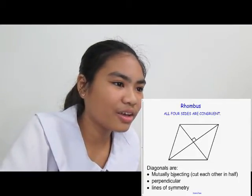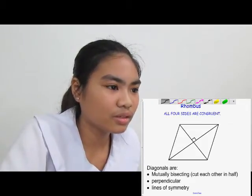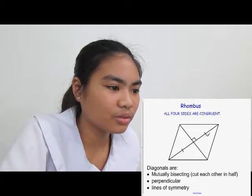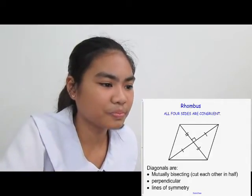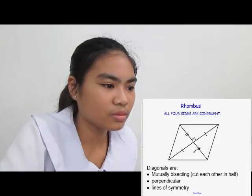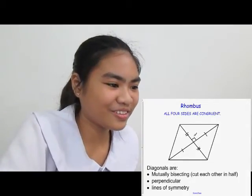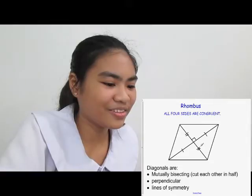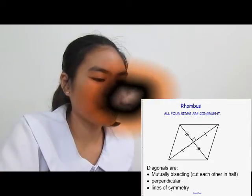They're mutually bisecting, which means this half here is the same as that half, and that is the same as that. So the diagonals are pretty special in rhombuses — they do a lot of cool things. The main things are that where they intersect it's perpendicular and mutually bisecting.